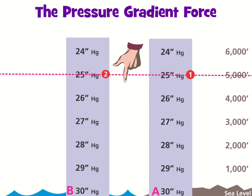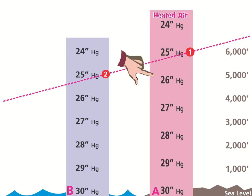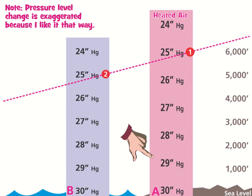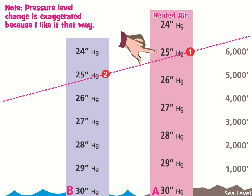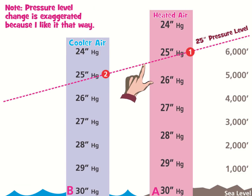Now, let's heat up the air in column A. Heated air expands, so the air in column A expands vertically by some small amount. As it does, watch what happens to the level where the air's pressure is 25 inches of mercury in that column. Position 1 moves up slightly. The 25-inch pressure level in column A now rests a little above the same pressure level — position 2 — of the unheated air in column B. We can now say that uneven heating of air caused all the pressure levels in the vicinity of 25 inches of mercury to slope downward to the left slightly.